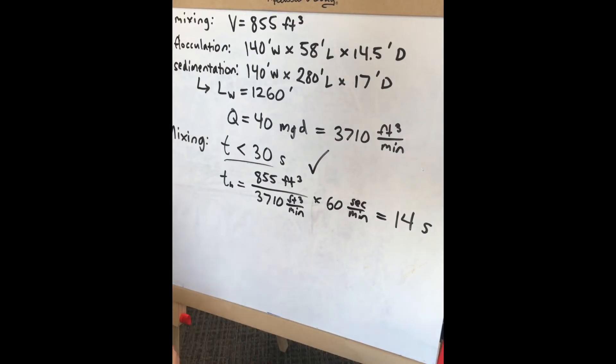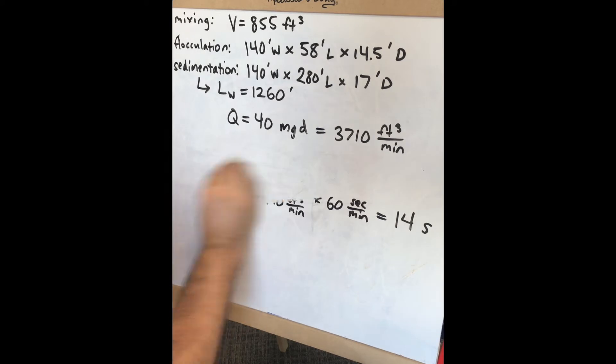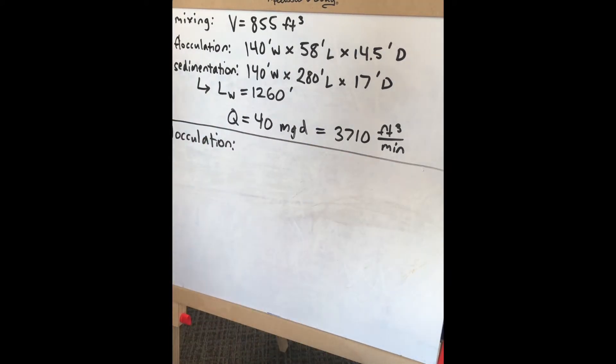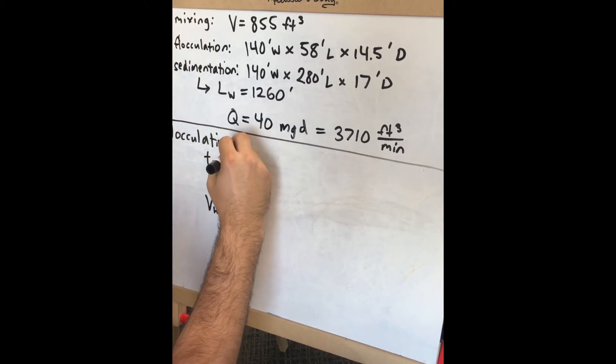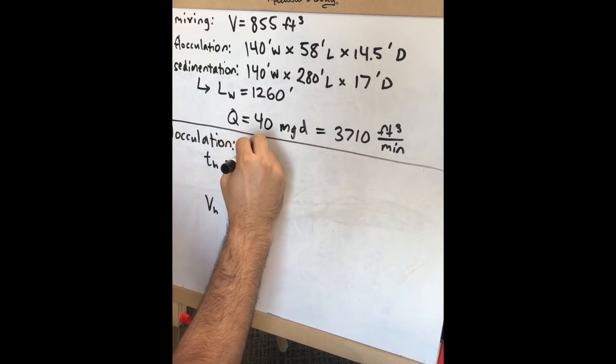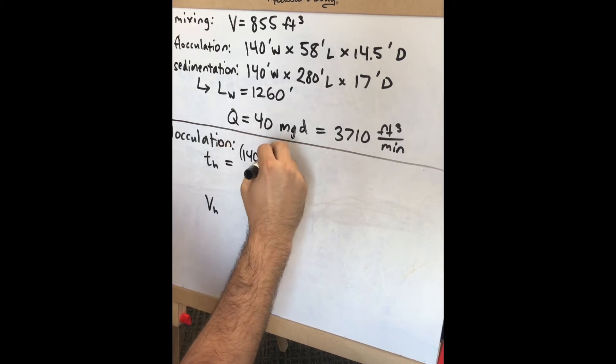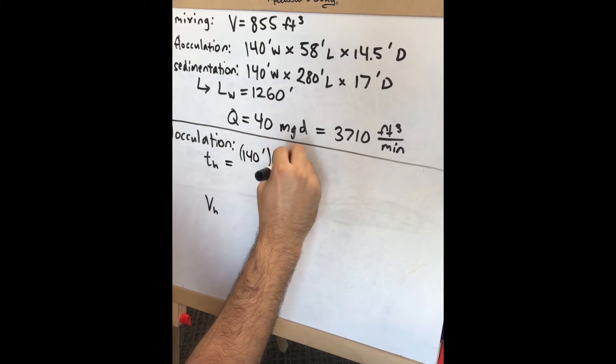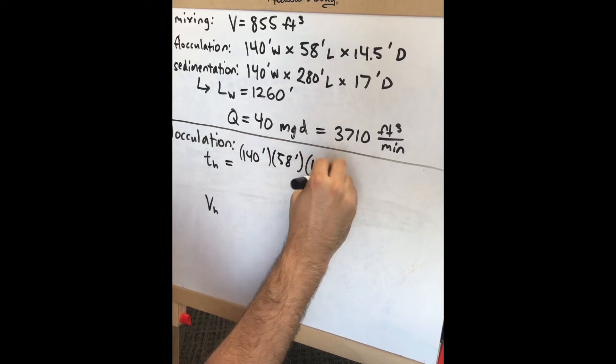For the flocculation basin, we need to examine detention time and horizontal velocity, as these are specified in the design criteria. For detention time, calculate the volume: 140 feet times 58 feet times 14.5 feet.